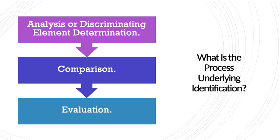Whenever we are going for handwriting identification, we try to follow the law of ACE — that is, Analysis, Comparison, and Evaluation. In Analysis, the questioned document we have received and the known items — that is, the collected samples — are analyzed, examined, and studied. We then try to reduce the examination to a matter of discriminating elements.